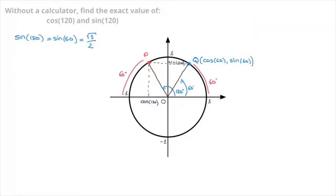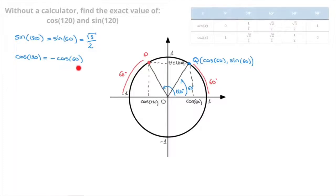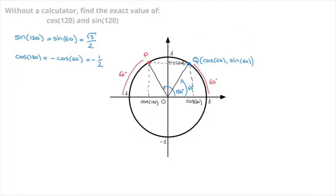We now compare the horizontal coordinates of these two points, P and Q. Point P has horizontal coordinate cosine of 120, and point Q has horizontal coordinate equal to cosine of 60. Since P and Q are the mirror images of each other across the vertical axis, their horizontal coordinates will also be the mirror images of each other — they'll have opposite values. Cosine of 120 equals to negative cosine of 60. Cosine of 60 is equal to 1 over 2, so negative cosine of 60 equals to negative 1 over 2. We've just found both the value of sine of 120 and cosine of 120.